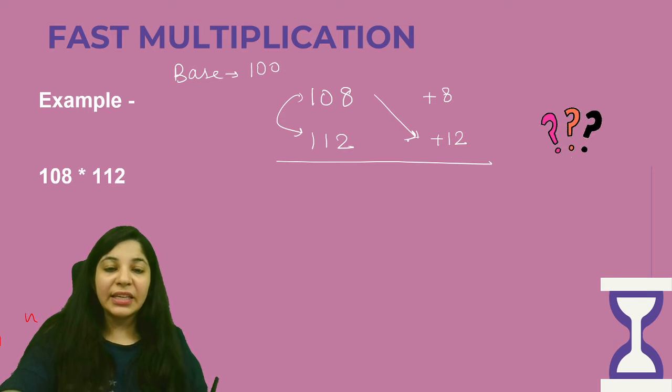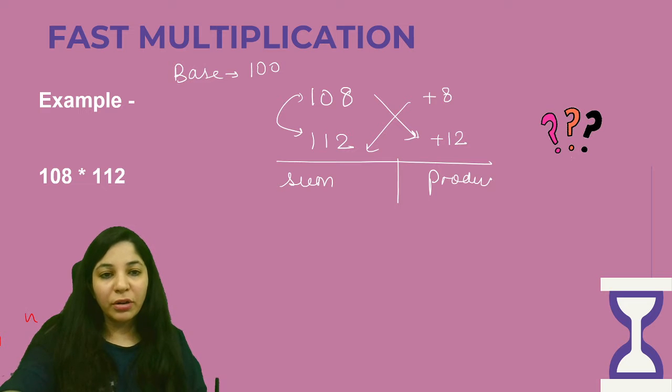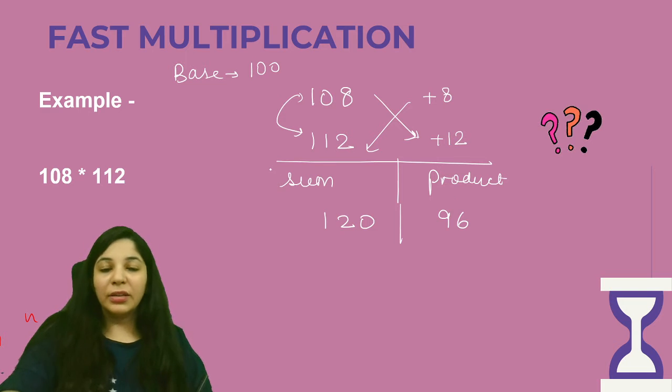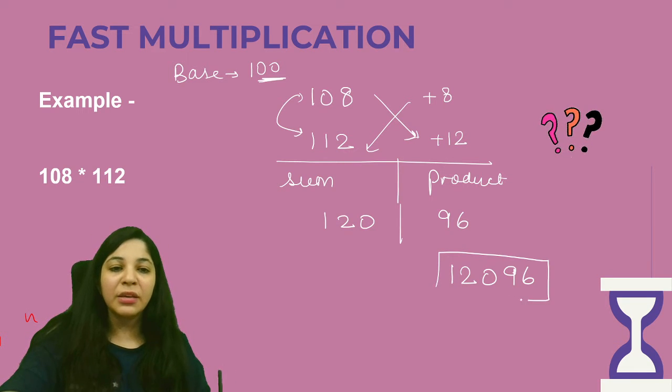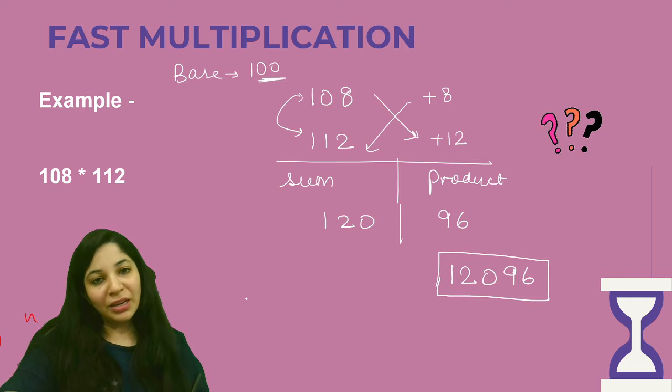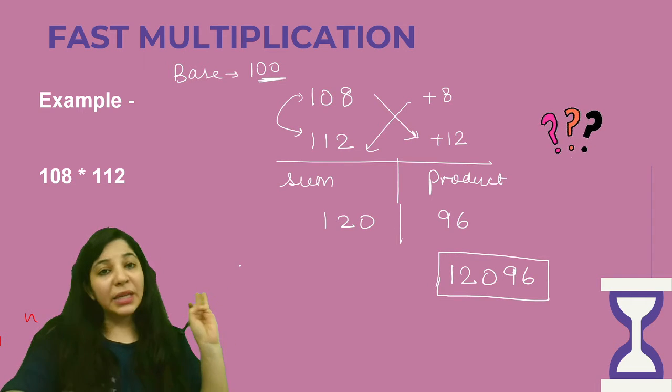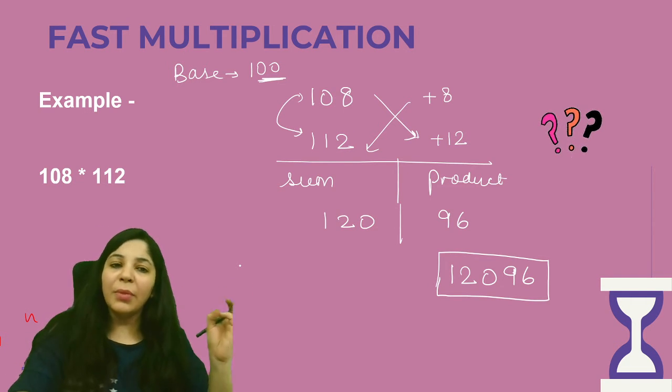Like I told you in the last video, same steps are going to be here. Here you are going to write the sum and here we are going to write the product. So the sum here goes to be 120 and product of 12 and 8 is 96. So the answer is 12,096. This is the multiplication of these two numbers.